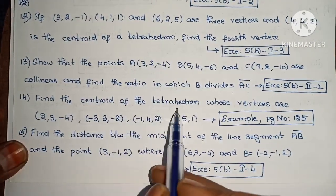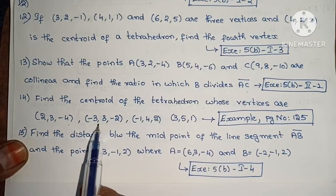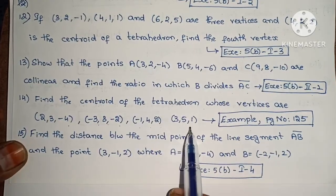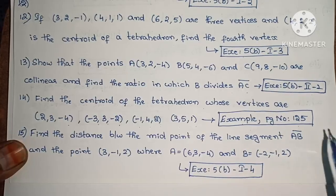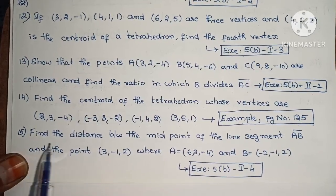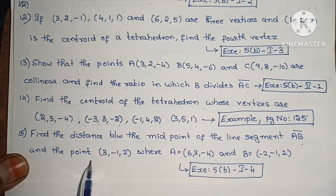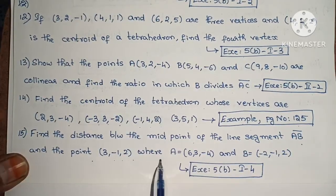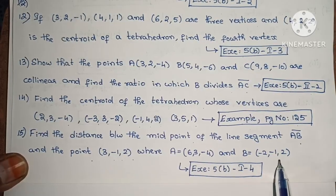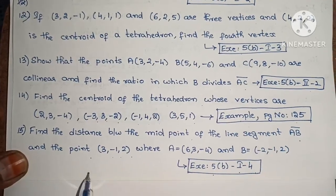Next, find the centroid of the tetrahedron whose vertices are (2,3,4), (-3,3,2), (-1,4,2) and (3,5,1) — Example, page number 125. Next, find the distance between the midpoint of the line segment AB and the point (3,1,2), where A equals (6,3,4) and B equals (-2,1,2) — Exercise 5B, first Roman numeral, fourth one.